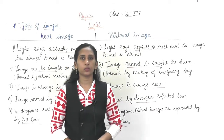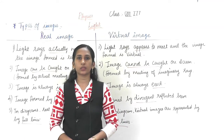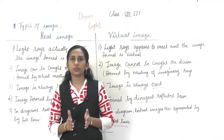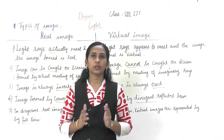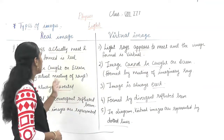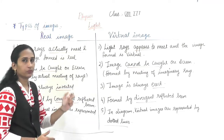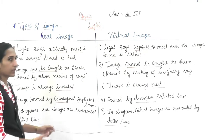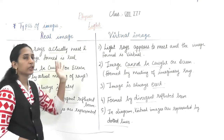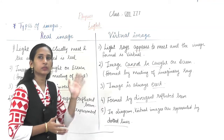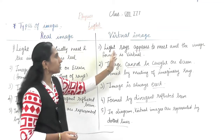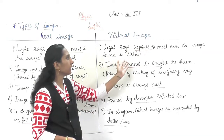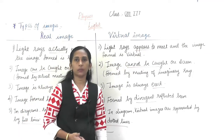Having studied reflection of plane mirrors, we will now study the difference between real image and virtual image. In a real image, light rays actually meet at a point, which is why the image is formed and called a real image. In a virtual image, light rays only appear to meet — we draw an imaginary line to where they seem to converge — and the image formed is called a virtual image.